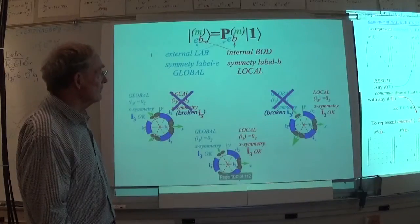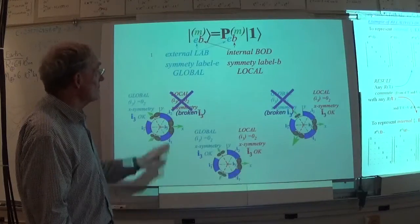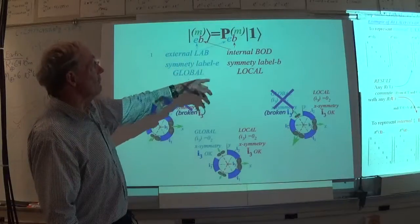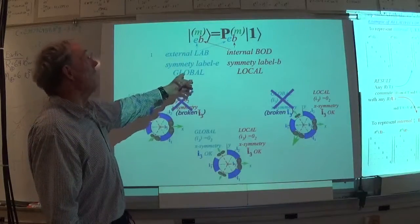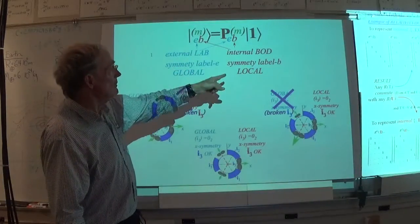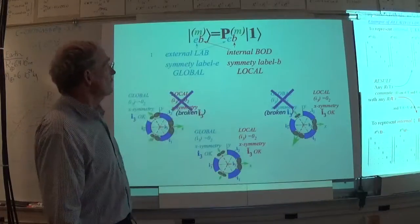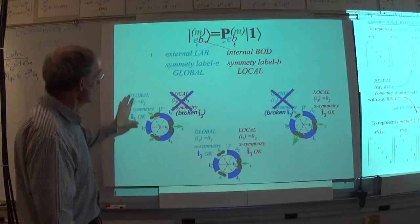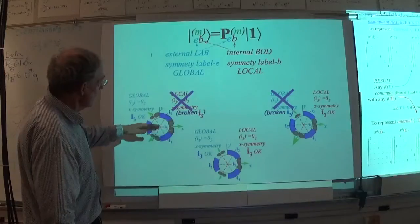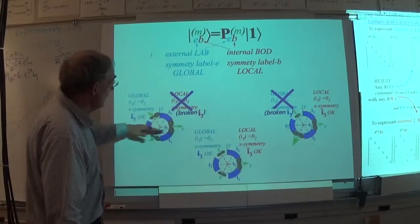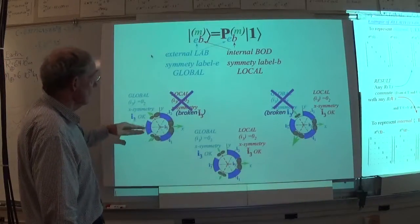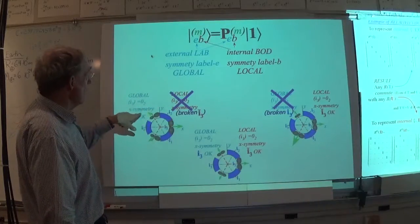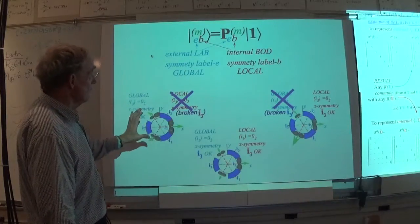Now, what happens when you actually look at the eigenfunctions for this thing? E stands for external, B stands for body or local. Here we've got global symmetry — look at that beautiful thing around that axis. That's the global axis. Global transformation transforms the whole globe. It's very symmetric. This one right here is zero mod two globally and locally. Here's a case where the global symmetry is broken — this is bigger or smaller than that one.